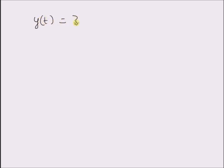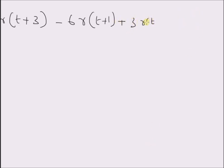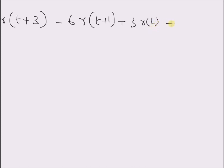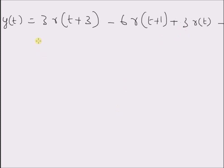Given the following signal y(t), defined as three times the ramp signal with slope three and offset equal to three, minus six times the ramp signal with offset equal to one, plus three times r(t) — that is a ramp signal with offset equal to zero — minus three times the unit step signal u(t - 3), that is the unit step signal shifted three points towards the right. We want to generate and plot y(t) in Python.